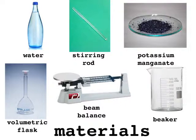We will be using the following apparatus. A chemical balance for measuring the mass of the solid. A watch glass to hold the solid while measuring the mass on the chemical balance. A beaker and glass rod for mixing the solid and liquid. And a volumetric flask for measuring the volume of the solution.